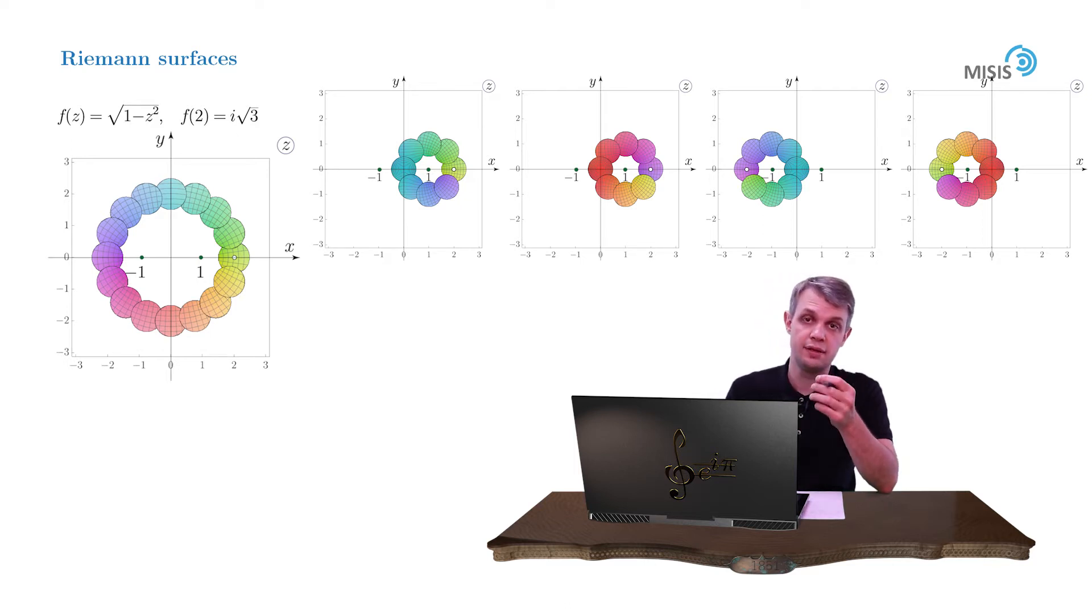In this case it's clear that two distinct locally analytic functions can be constructed at each point, with the exception of course of branch points at z equals plus minus 1. However, the connection rules allow for the construction of two distinct Riemann surfaces.